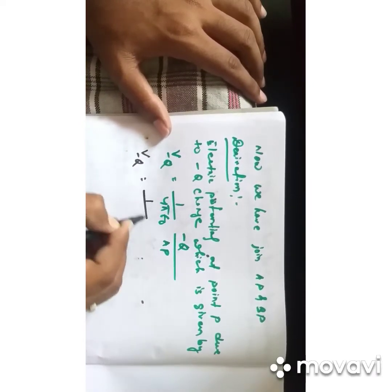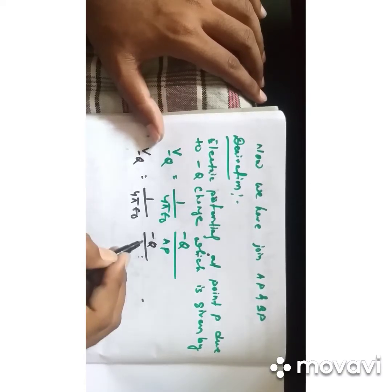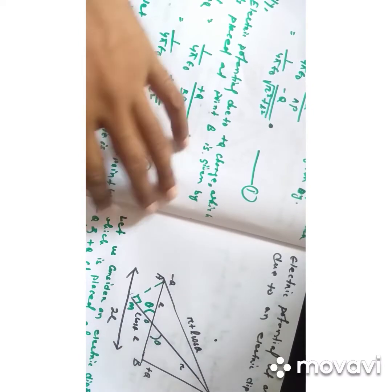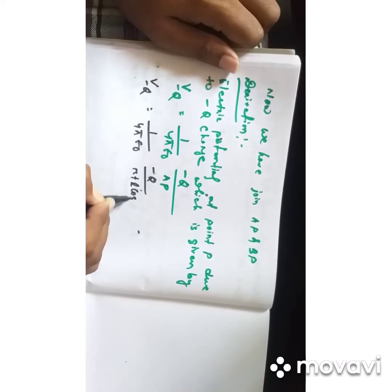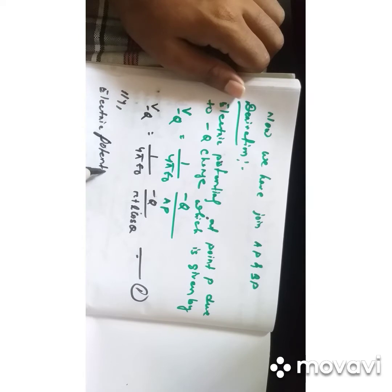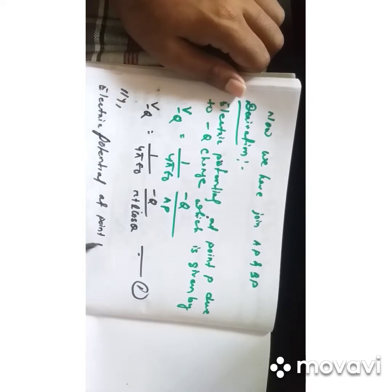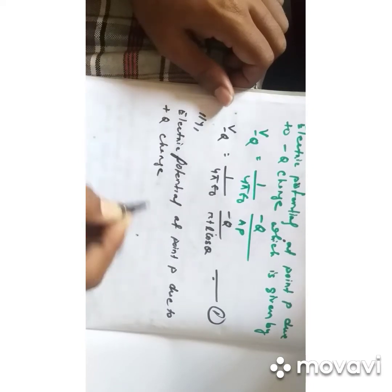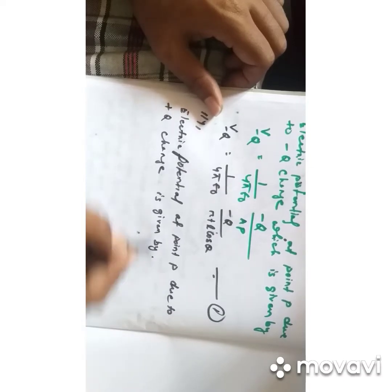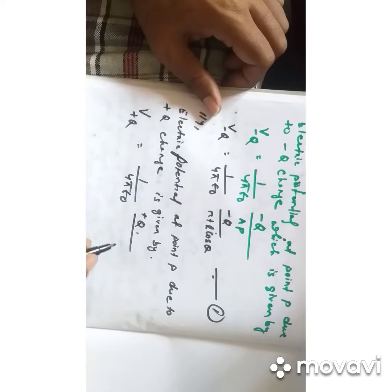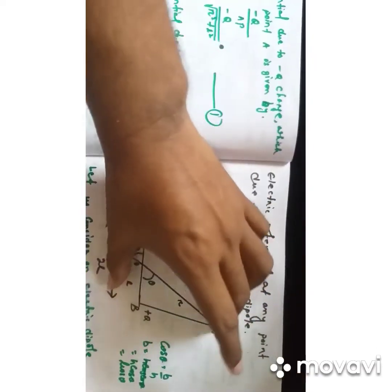Therefore, V due to minus Q charge equals (1/4πε₀)(−Q/AP), and since AP = R + L cos θ, we write: V(−Q) = (1/4πε₀)(−Q/(R + L cos θ)) — this is equation number one. Similarly, the electric potential at point P due to plus Q charge is given by V(+Q) = (1/4πε₀)(+Q/BP), where BP is the distance from the plus Q charge to point P.